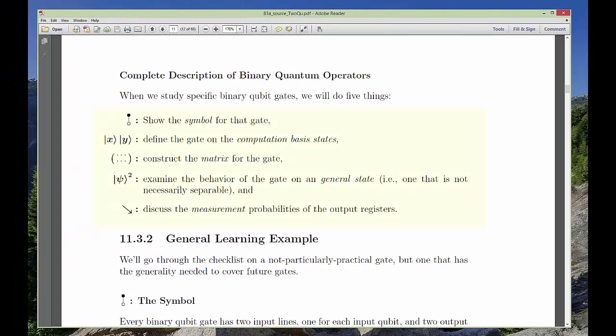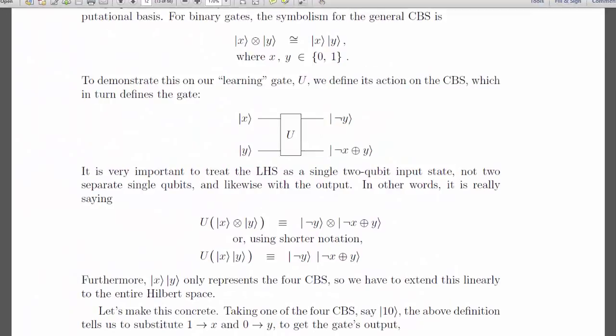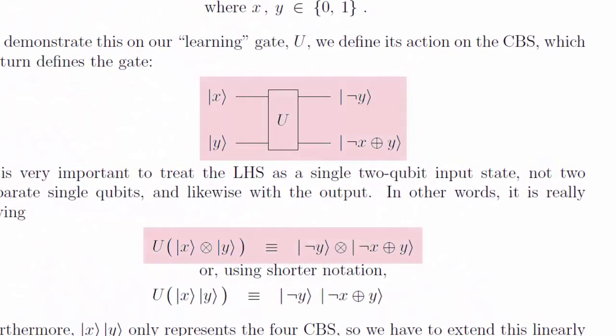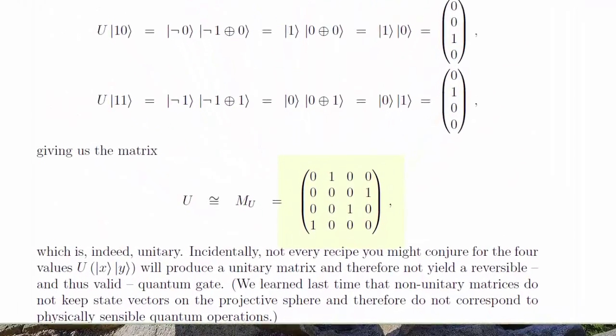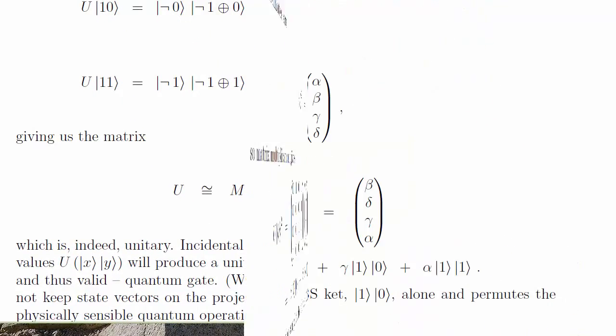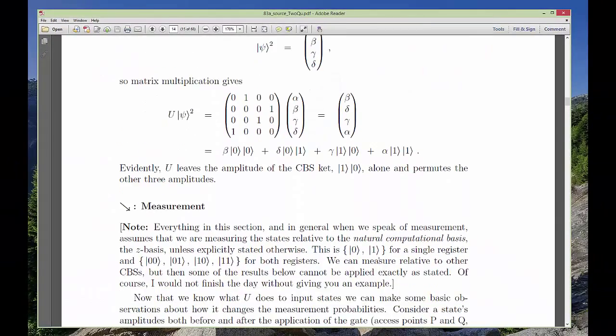There will be five aspects of every gate I want you to understand. Three of them are just different and equivalent ways to define the gate. How the gate acts on the four CBS kets, the matrix for the gate, and the effect the gate has on an arbitrary state in the space.